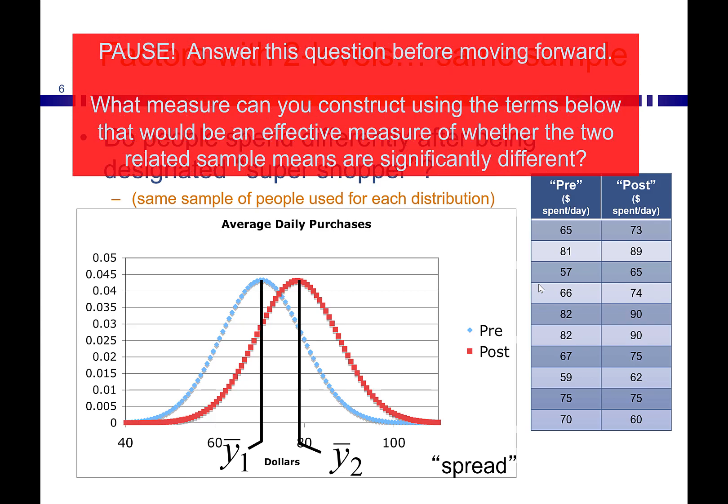Pause for a second and answer this question: what measure can you construct using the terms below that would be an effective measure of whether the two related sample means are significantly different?